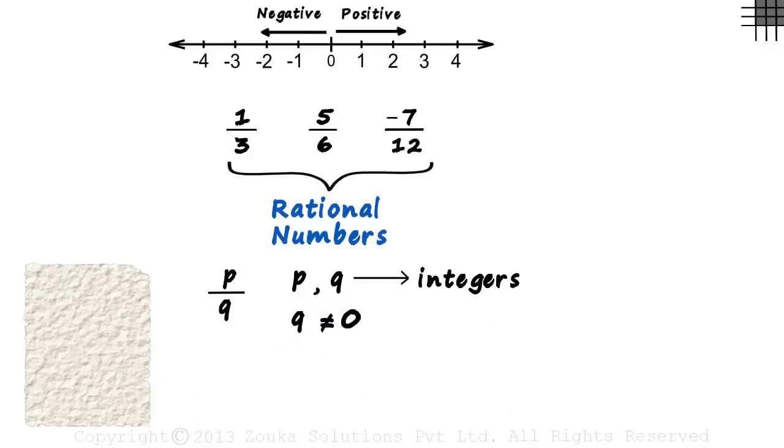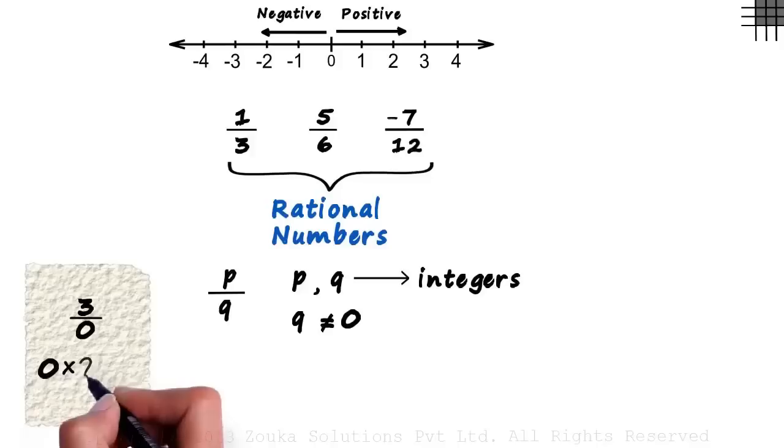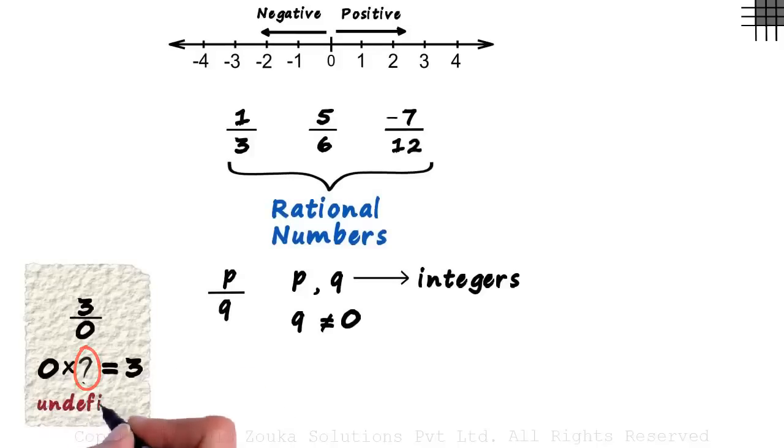Why do we have the second condition? Say I ask you to calculate 3 divided by zero. What would be the quotient? Zero multiplied by what will give you three? There is no such number. This value is undefined. So this is the basic definition of rational numbers.